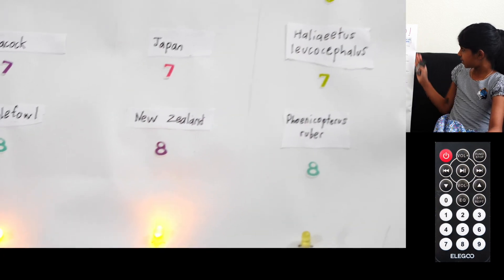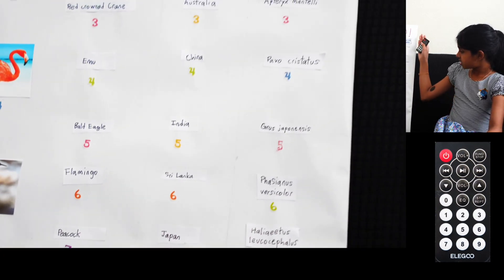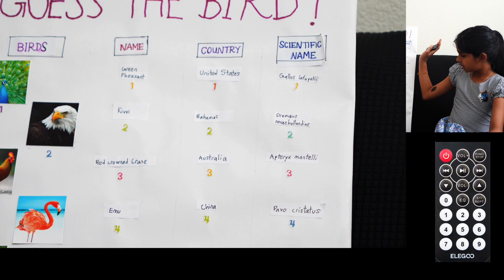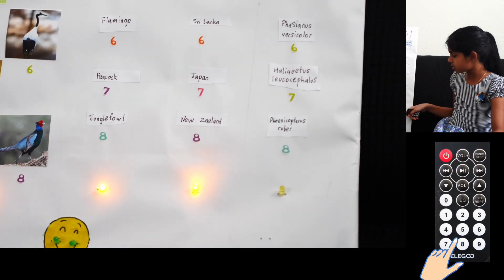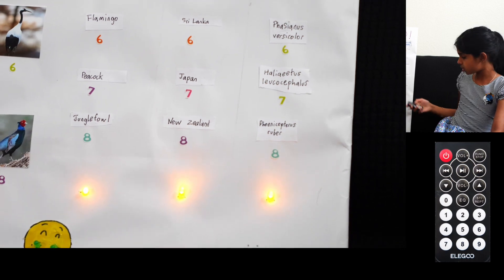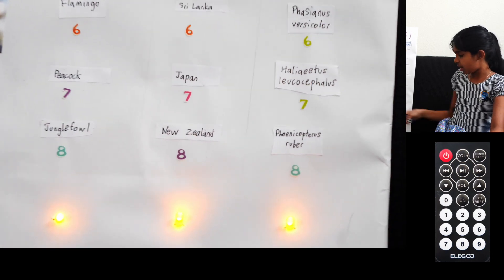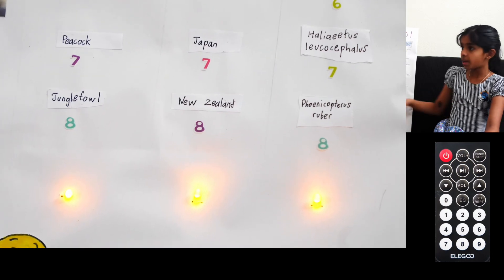Finally, we look at the scientific name section to see the bird's scientific name. The flamingo's scientific name is Phoenicopterus ruber, which is number eight on the very bottom. So I press eight, and now all four of them have lit up.